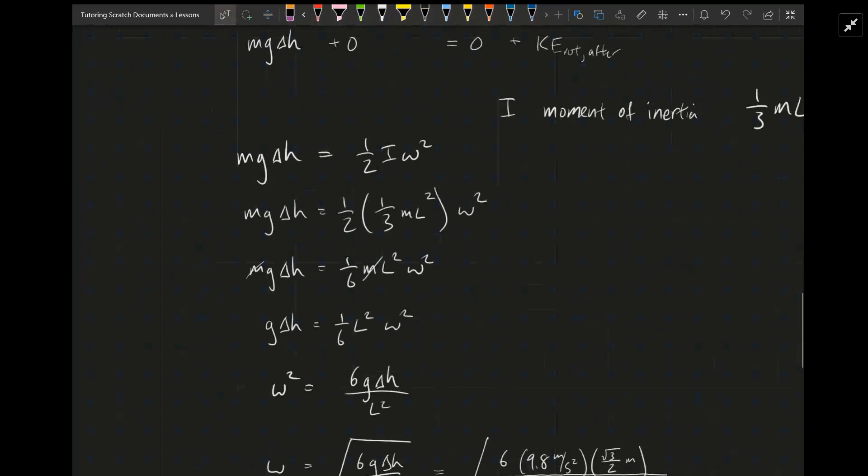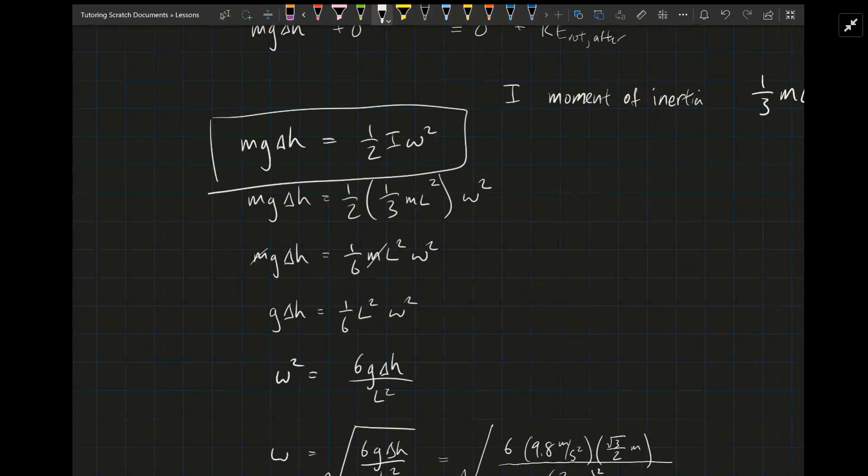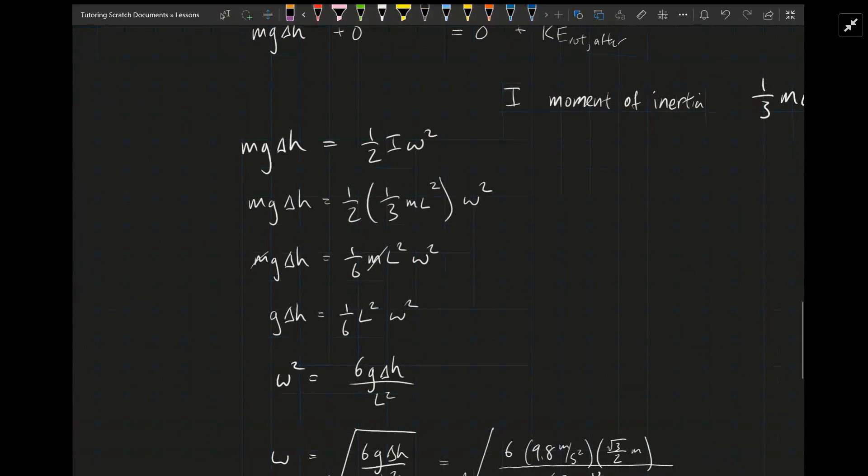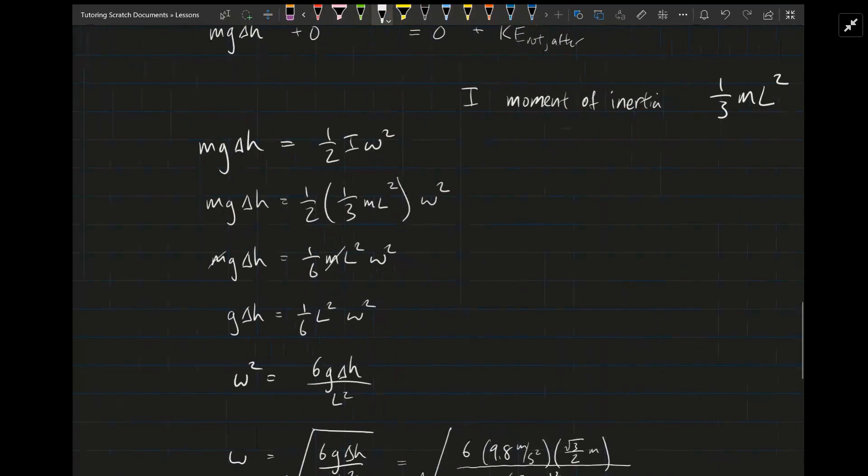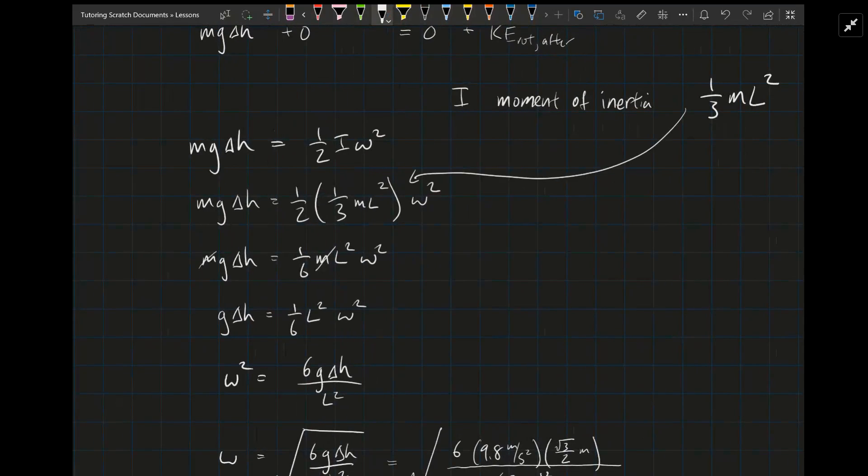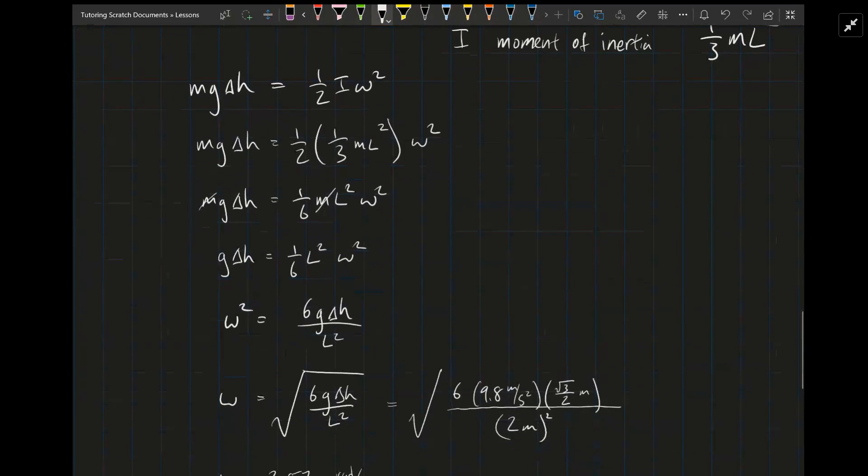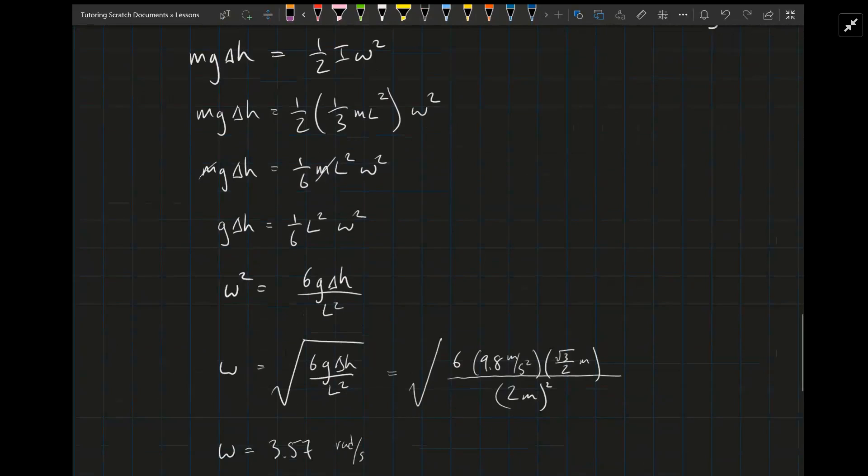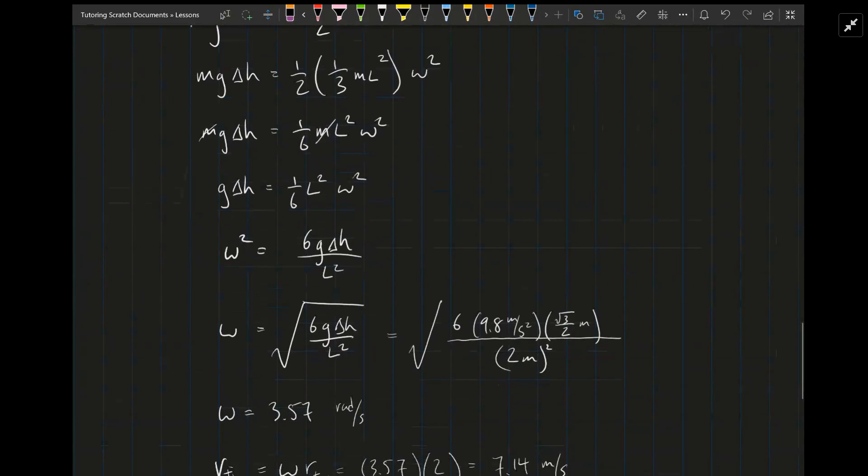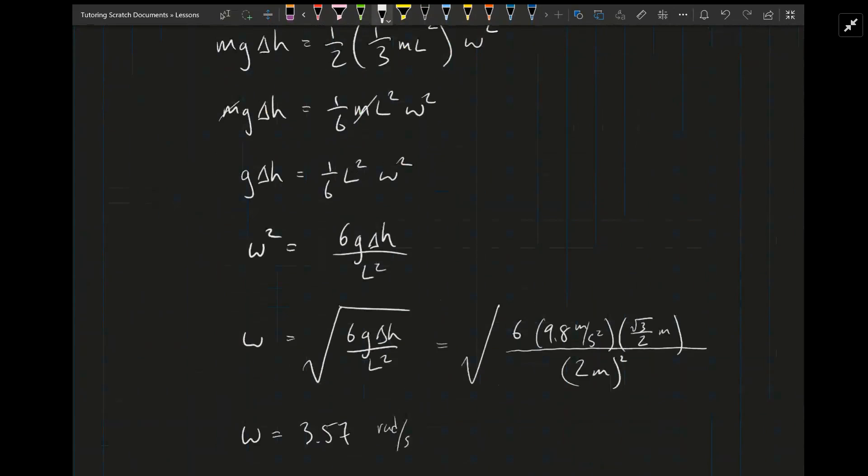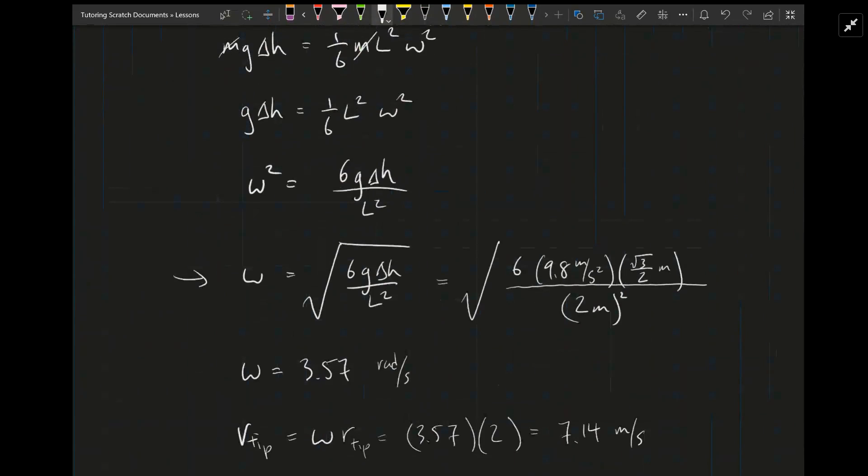Now, applying everything that we know, we have mgh equals one half I omega squared. So mg delta h equals one half times I, which is one half times one third ml squared times omega squared. The masses cancel. You can multiply one half and one third to get one sixth, and it simplifies. We can reorganize, divide by one sixth l squared on both sides, and we get that omega is the square root of 6g delta h over l squared.